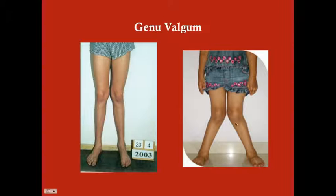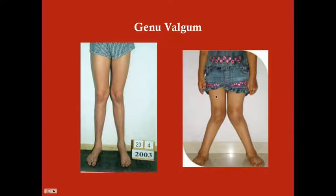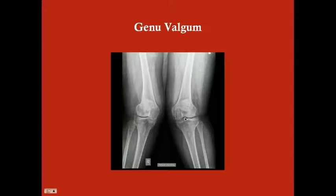Here are a couple of other genu valgum cases — the one on the right is much more severe than the one on the left. These patients have their legs as close together as they can and still can't get their feet together. There's a measurement called the Q angle used to determine severity technically, but you don't need to know that for the USMLE. Here's an x-ray showing the knees knocked together.